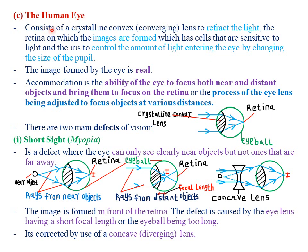The third application is the human eye. The human eye usually consists of a crystalline convex, or converging, lens. Its purpose is simply to refract the light from the object and focus it onto the retina. The human eye has the retina, which is simply the point where images are usually formed — it has cells that are very sensitive to light. The other part within the human eye is the iris, which simply controls the amount of light entering the eye by changing the size of the pupil.